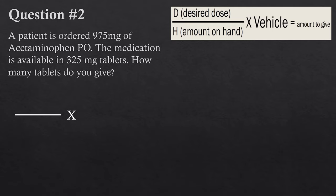Question two: a patient has ordered 975 milligrams of acetaminophen PO. The medication is available in 325 milligram tablets. How many tablets do you give? If you feel comfortable, pause the video and try the question yourself. The desired dose is 975 milligrams — that's what we want the final result to be — so we put that up top.